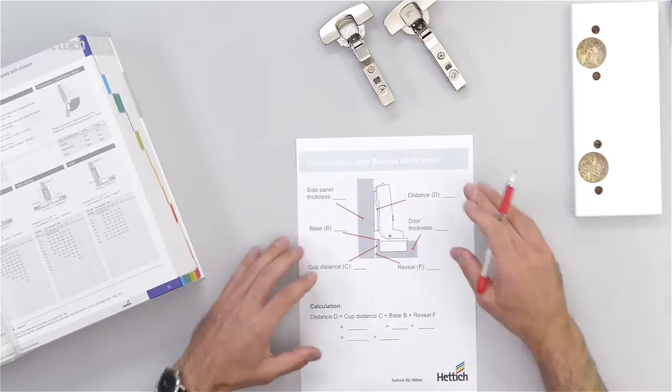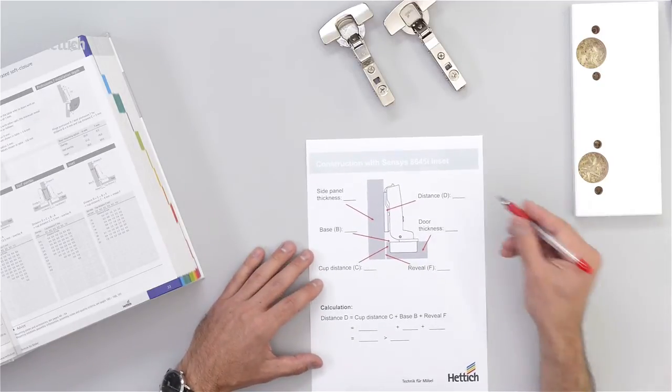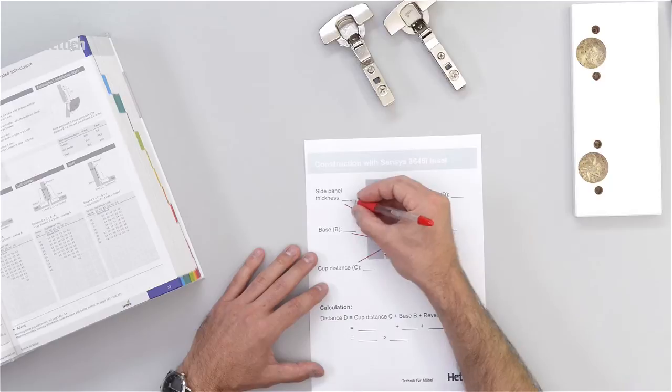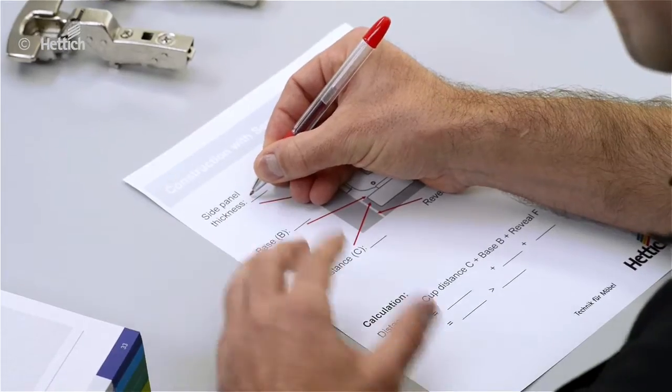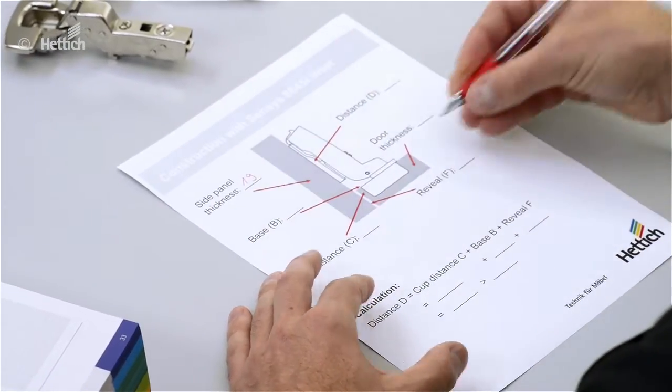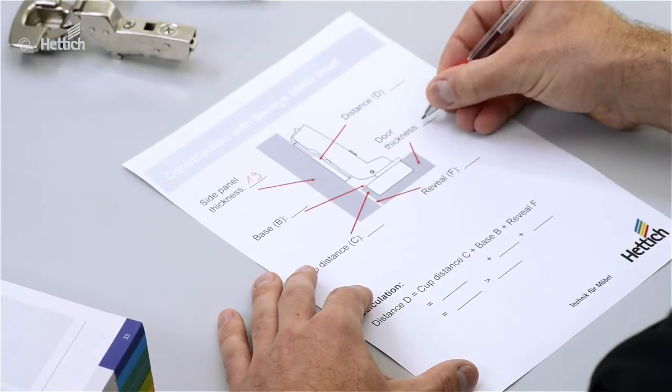So we go to the calculation sheet. The side panel thickness is given as 19 millimeters in this example. Also the door thickness is 19 millimeters.